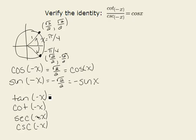tan(-x) would be sin(-x) / cos(-x). We know that sin(-x) is -sin(x) and cos(-x) is cos(x).